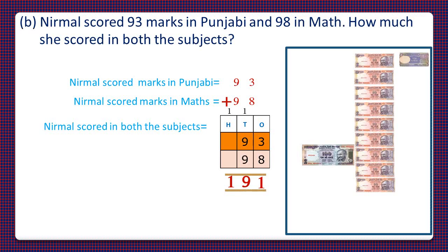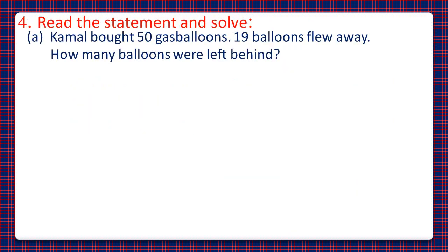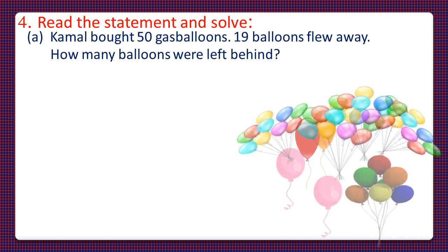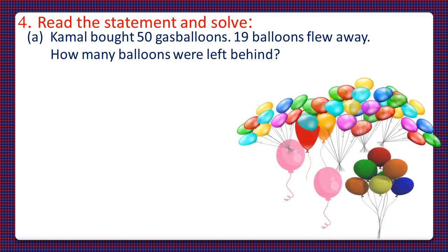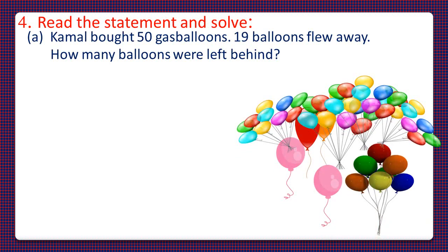Our answer is 191. So Nirmal secured 191 marks in both the subjects. Now let's move to question number 4. Kamal bought 50 gas balloons, 19 balloons flew away. How many balloons were left behind?